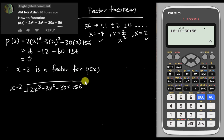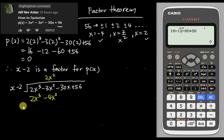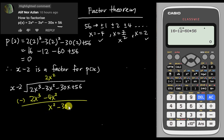For long division, the objective is to eliminate the first term. To get 2x³, I multiply by 2x²: so 2x² times x gives 2x³, and 2x² times negative 2 gives minus 4x². Then 2x³ minus 2x³ equals zero, and negative 3x² minus negative 4x² gives positive x². Bring down minus 30x. Now eliminate x² by multiplying by positive x: x times x gives x².